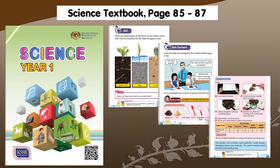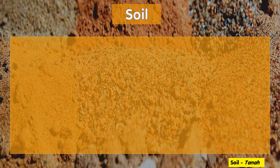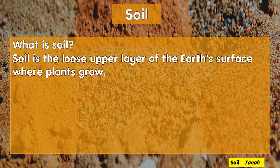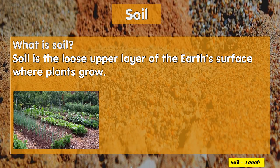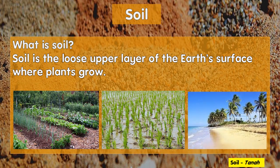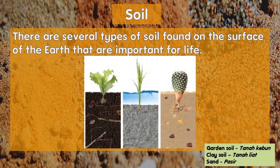In today's lesson, you may refer to your Science textbook on pages 85 to 87. Soil. What is soil? Soil is the loose upper layer of the earth's surface where plants grow. There are three types of soil you must know: garden soil, clay soil, and sand.